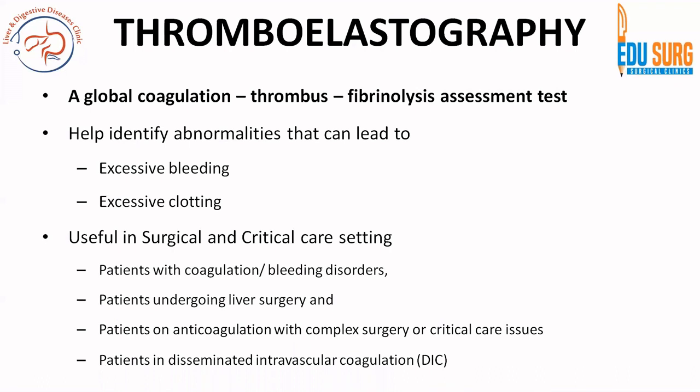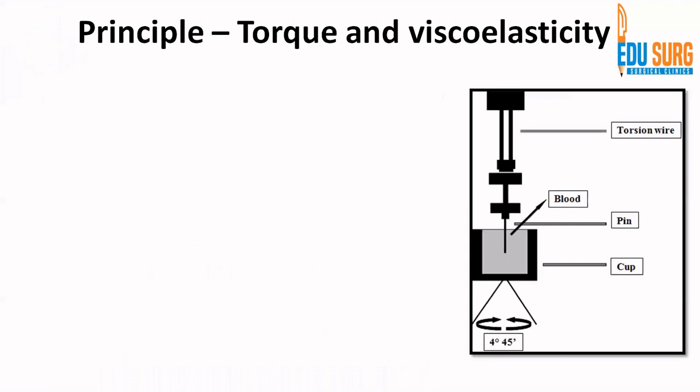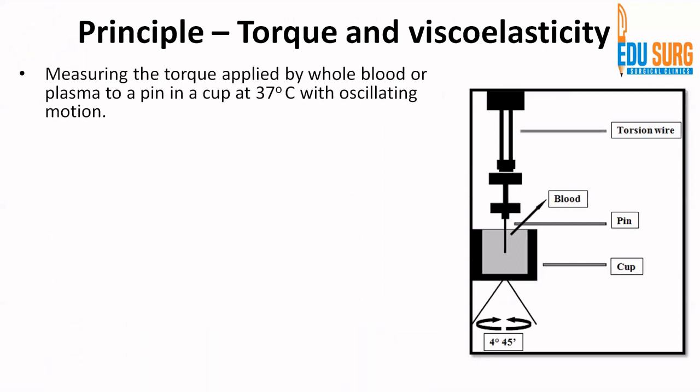If you have in-house TEG testing, you can get the report in around one hour. In very simplified terms, TEG measures the torque on a pin. This is a graphical representation of the TEG device — the cup shown in this figure will hold the blood of the patient.